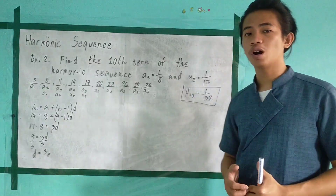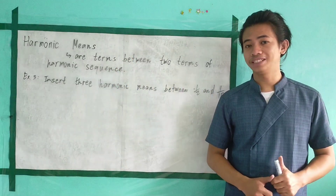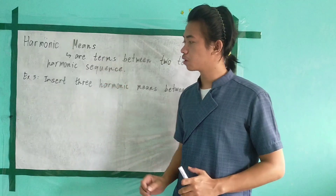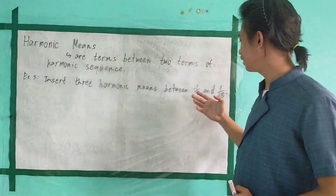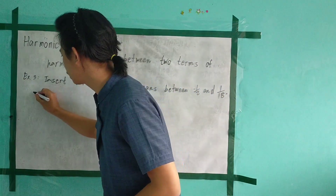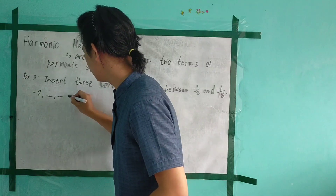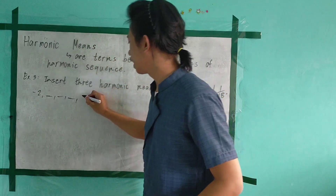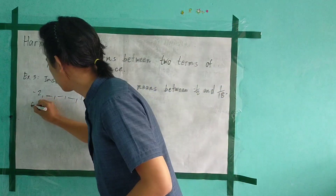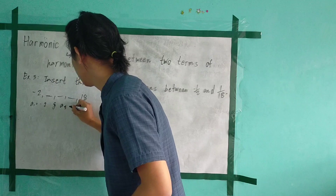Now let's talk about harmonic means. Harmonic means are terms between two terms of a harmonic sequence. Example number 3: insert three harmonic means between negative 1 half and 1 over 18. The corresponding arithmetic sequence is: negative 2, insert three arithmetic means, and then 18. So A sub 1 is equal to negative 2 and A sub 5 is equal to 18.